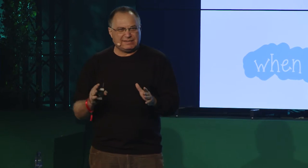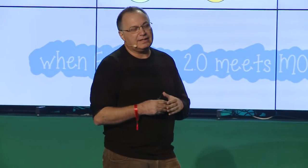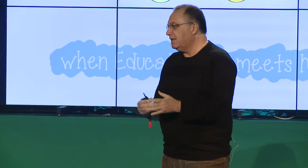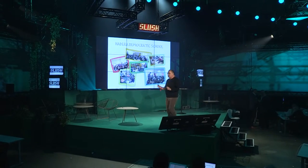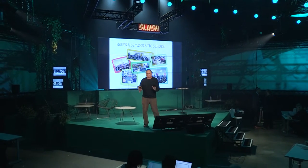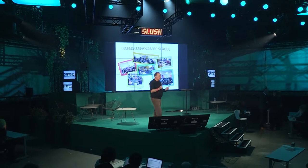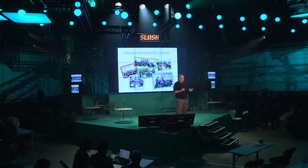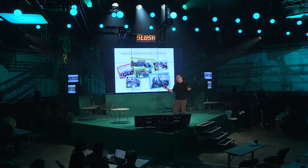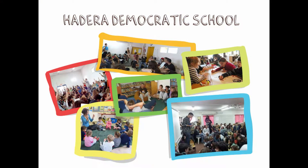We do two major things. One, the school is run by the democratic process — run by students, teachers, and parents. And the second thing: in the democratic school, every student has a different learning plan. Every student chooses what to learn, how to learn, who to learn. It's a mixed-age situation, and everything is run by personality.